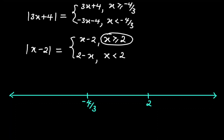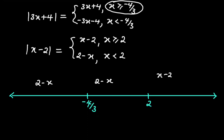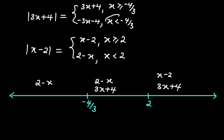Here is negative 4 over 3, and here is 2. When x is greater than or equal to 2, the absolute value of x minus 2 is just equal to x minus 2 — this is the rightmost region. When x is less than 2, the absolute value of x minus 2 equals 2 minus x — this applies to the two left regions. When x is greater than or equal to negative 4 over 3, the absolute value of 3x plus 4 is 3x plus 4, covering the two right regions. When x is less than negative 4 over 3, the absolute value of 3x plus 4 is negative 3x minus 4.